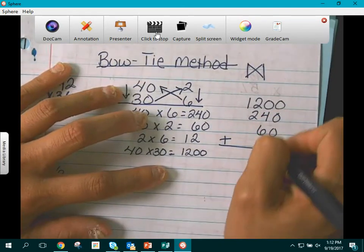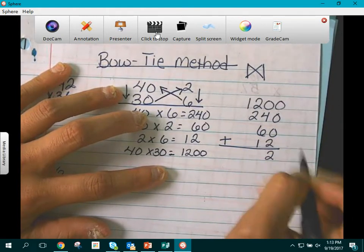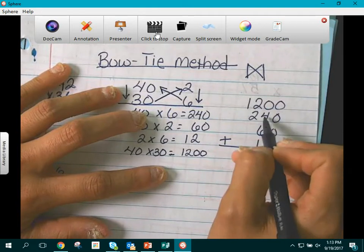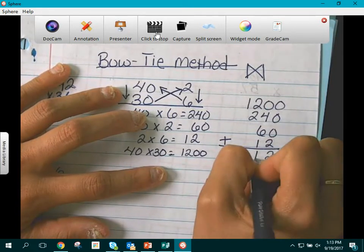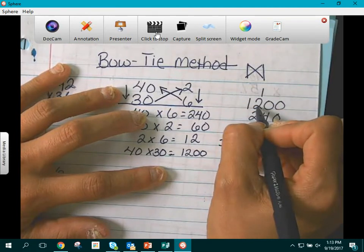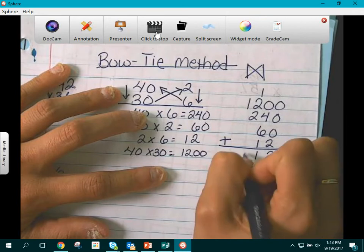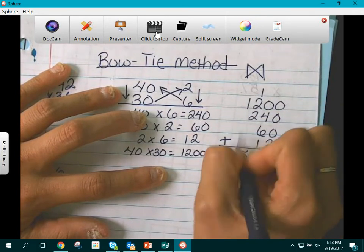So we are going to add all our 1's place together. We have 3 zeros and a 2. So we have 2. 4 plus 6 is 10. Plus 1 more gives us 11. 1 plus 2 is 3. Plus 2 more will give us 5.